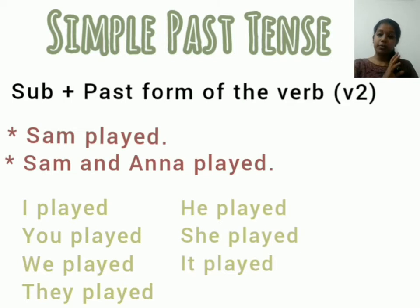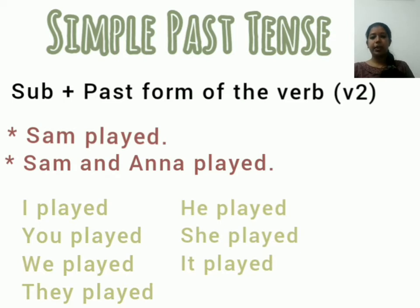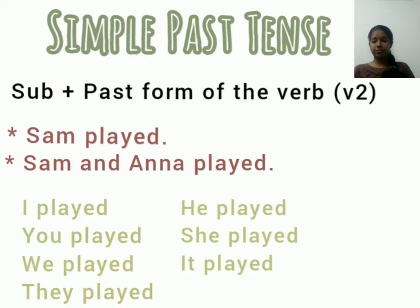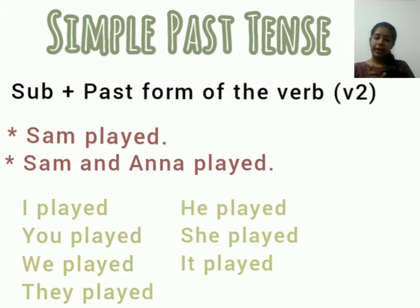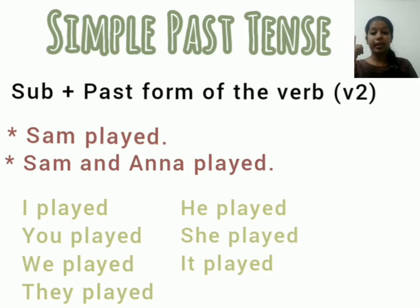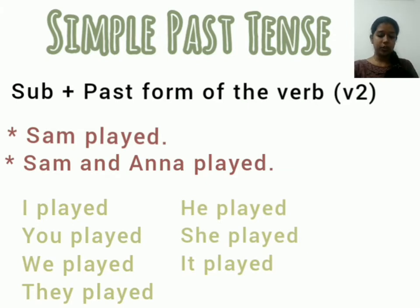In simple past tense, there is no difference between any subjects. But remember, in all the present tenses, the number of the subject is very, very important. In past tense, there is no difference in the number of subjects. Just read the sentence and identify the verb, then think of the second form — the past form — of that verb. I will upload the next video so you can do it properly.